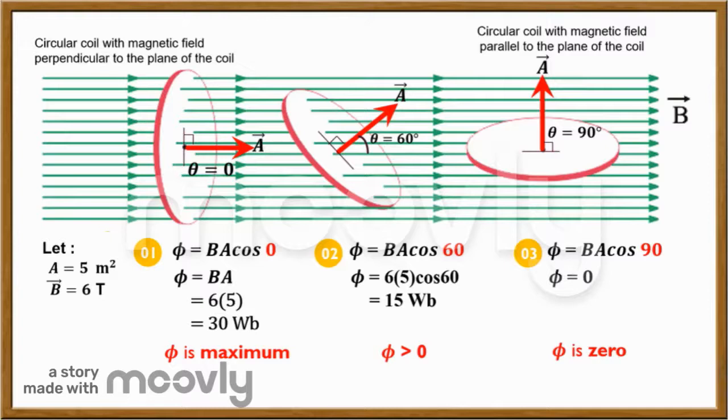For the third orientation, vector A is exactly 90 degrees to the magnetic field. So cos 90 degrees is 0, and that means the magnetic flux is 0.